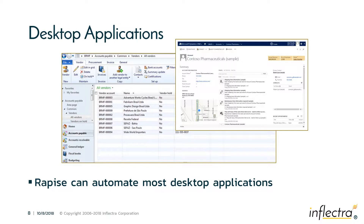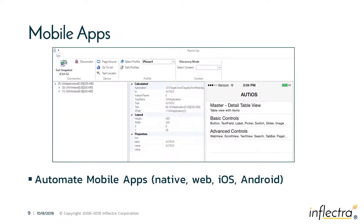When it comes to desktop applications, RAPEES can automate most technologies you may come across — .NET applications, Windows applications, Win32, Java, Qt Framework, and a variety of packaged applications such as Microsoft Dynamics AX and NAV. RAPEES also handles mobile applications, both web applications running in a mobile browser and native apps written directly for the platform, supporting both Android and iOS versions, for both tablet and cell phone.